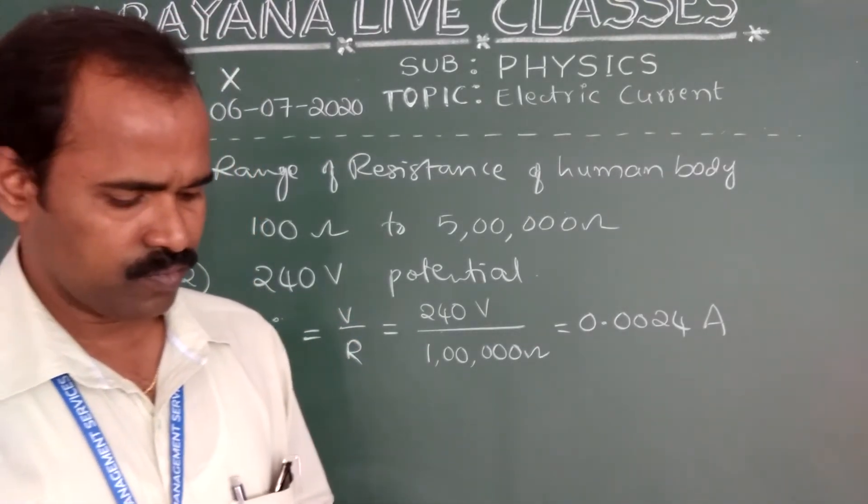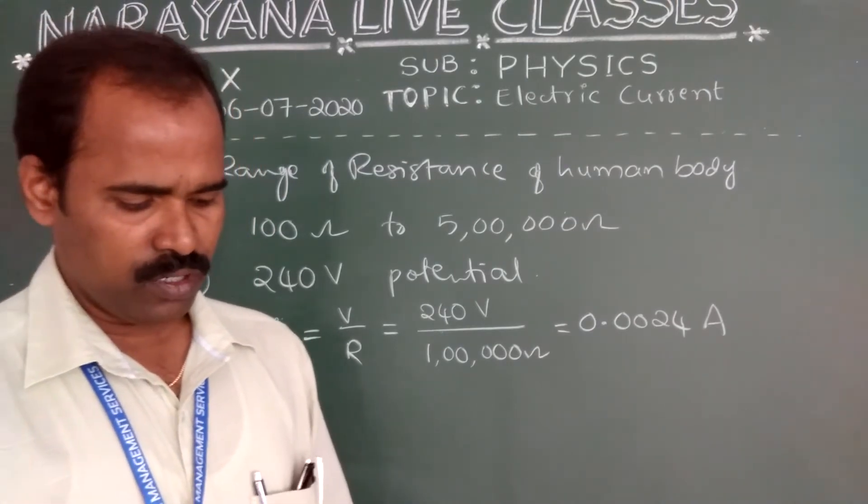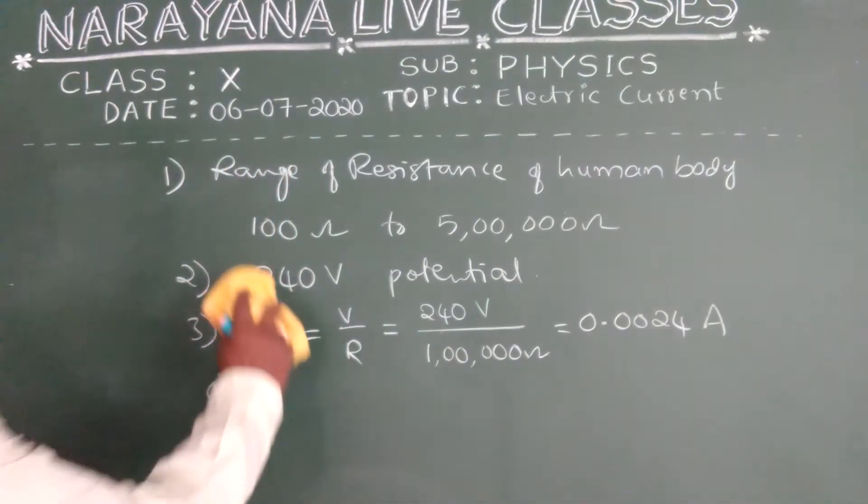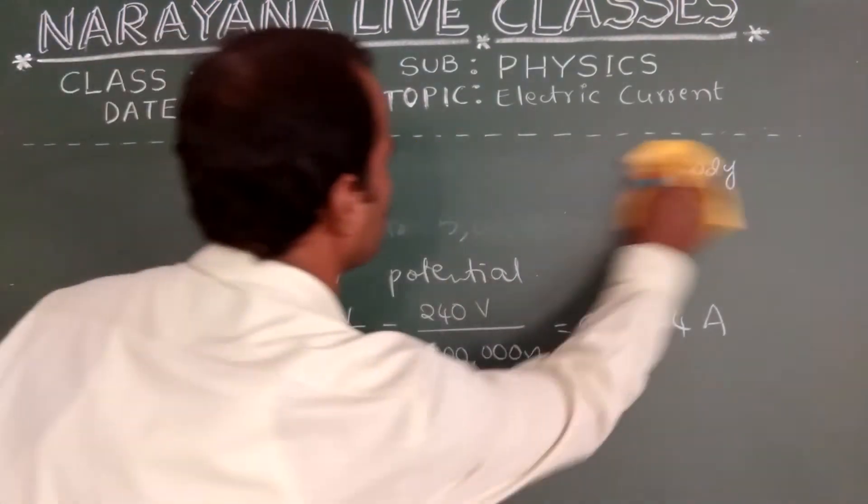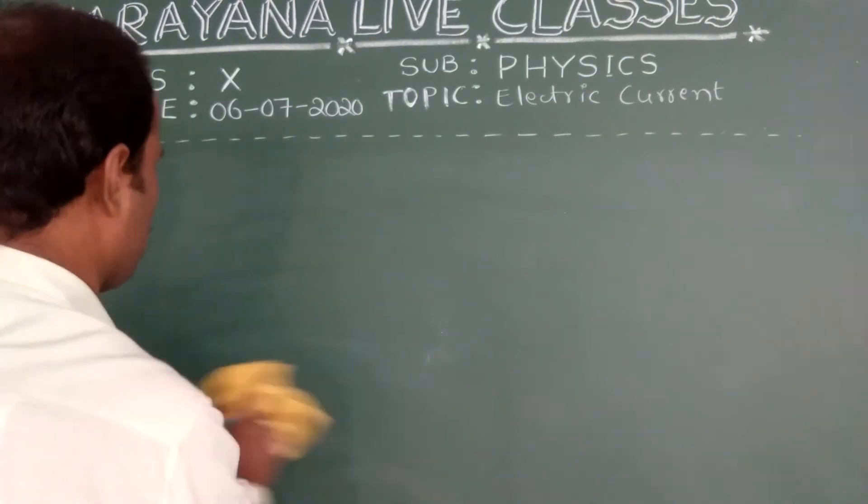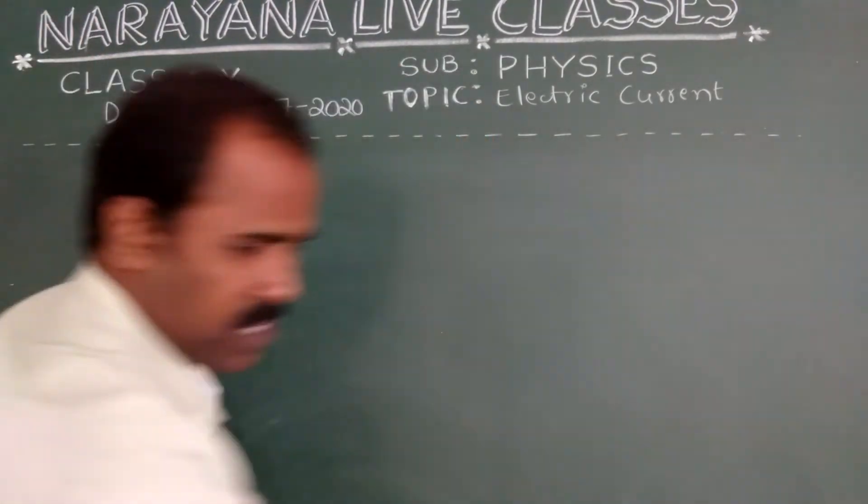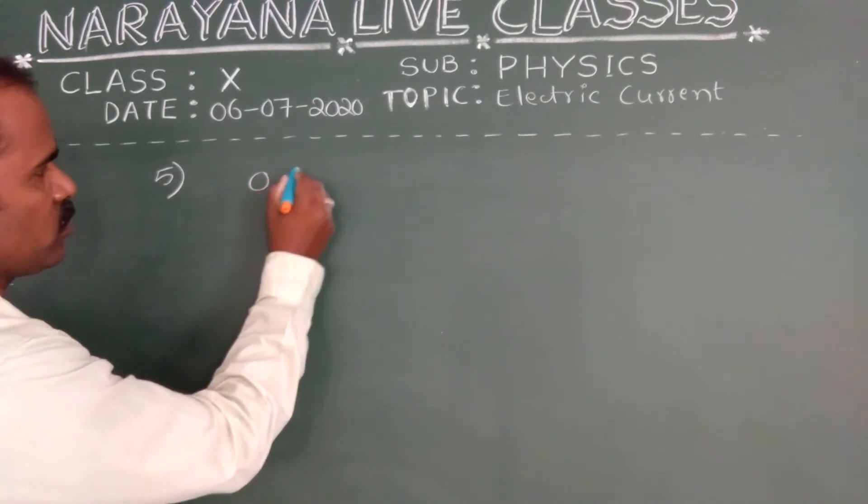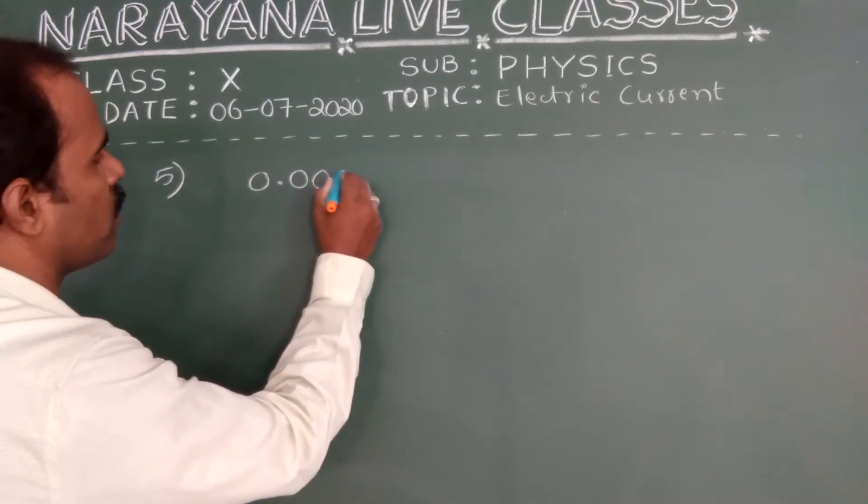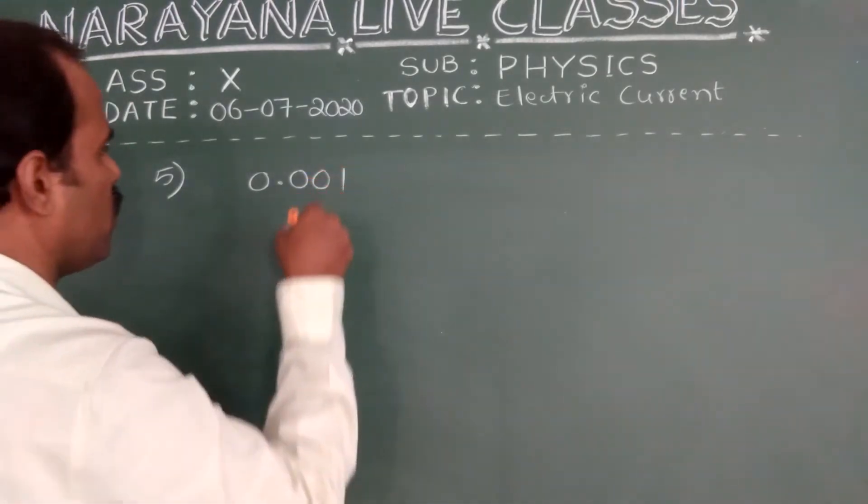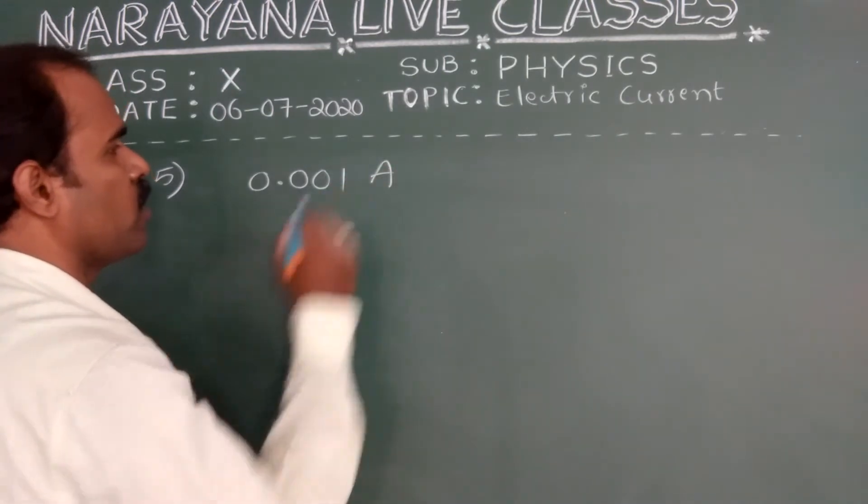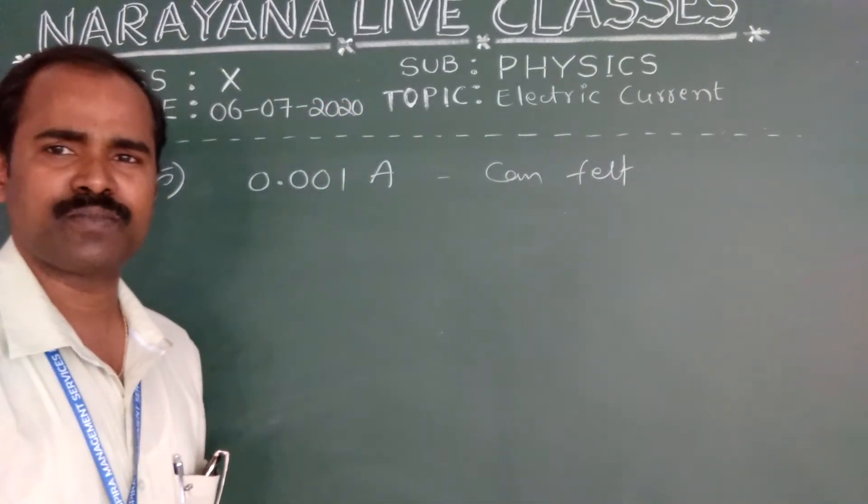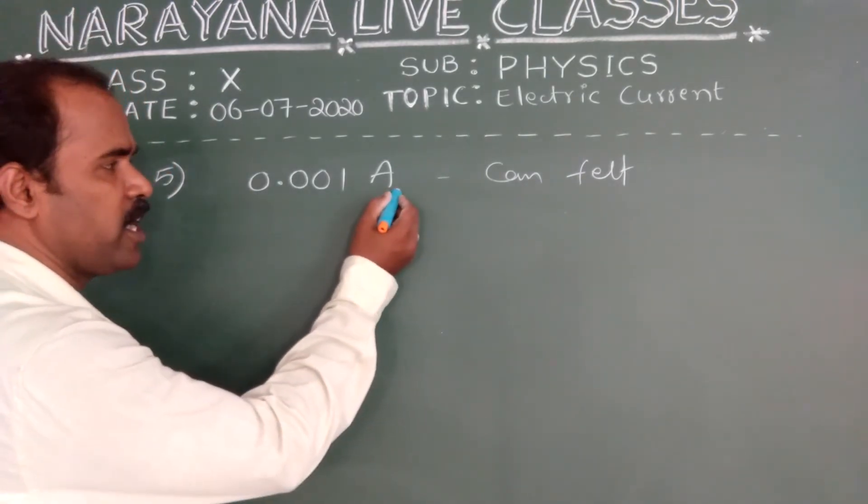Next question: make a table to describe the effects of electric current on human body. If the current passing through our body is about 0.001 ampere, what happens? We can felt. We can felt on the ground. If this much amount of current passing through our body, we may felt on the ground.